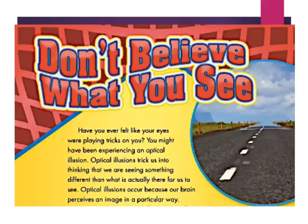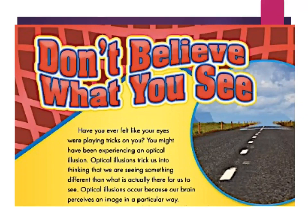Have you ever felt like your eyes were playing tricks on you? You might have been experiencing an optical illusion. Optical illusions trick us into thinking that we are seeing something different than what is actually there. Optical illusions occur because our brain perceives an image in a particular way. Do you remember what "optical" meant? It refers to your vision, and "illusion" comes from the Latin root meaning mocking or tricking. So optical illusions literally means something that is tricking your eyes.